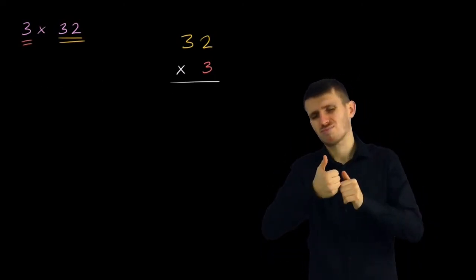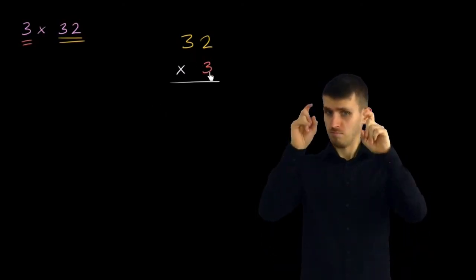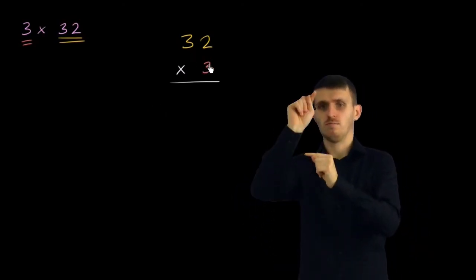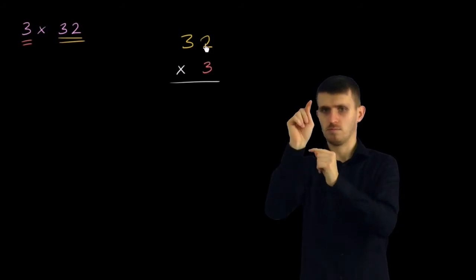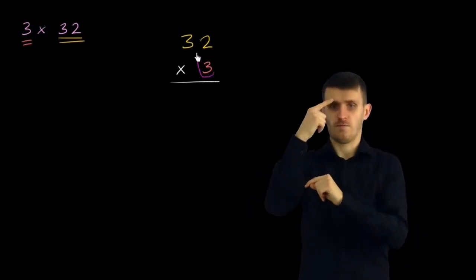This is only one way of doing it. There's many ways of doing it. And I want you to think about why this works. So we'll start with this 3 down here, and we're going to multiply it times each of the digits in 32. So we'll start with 3 times 2.